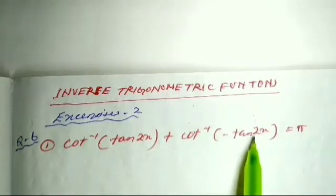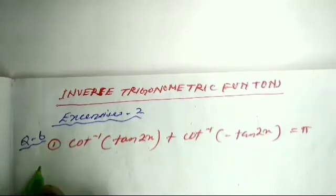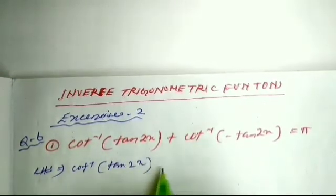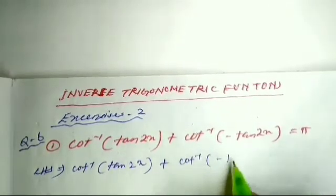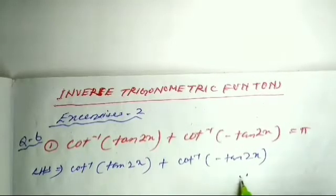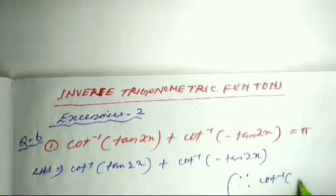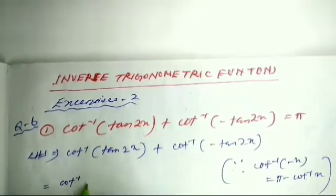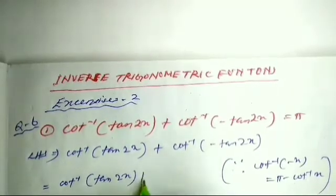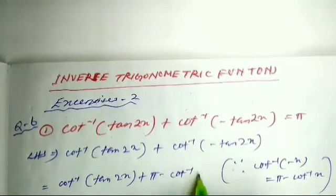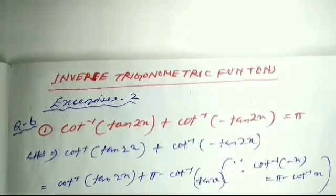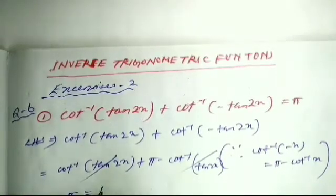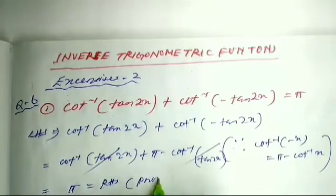Question 6a: cot⁻¹(10^x) + cot⁻¹(-10^x) = π. LHS is cot⁻¹(10^x) + cot⁻¹(-10^x). The formula applicable here is: cot⁻¹(-x) = π - cot⁻¹(x). So we get cot⁻¹(10^x) + π - cot⁻¹(10^x). The cot⁻¹(10^x) and minus cot⁻¹(10^x) cancel, leaving only π, which equals RHS. This is solved in 3 lines.